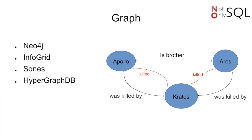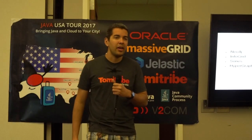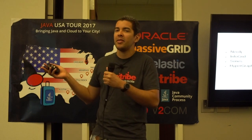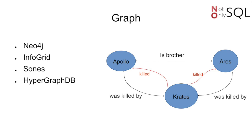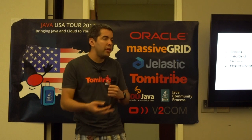Now I have the graph NoSQL database. Basically I can save relationships between vertices. For example, I have Apollo and Ares — both are brothers. And I have Kratos, who kills Apollo and kills Ares. Basically I keep the relationship between these nodes. Services like Netflix and LinkedIn use graph databases to suggest information — 'this person has something in common with you.' They use graph databases to solve that.